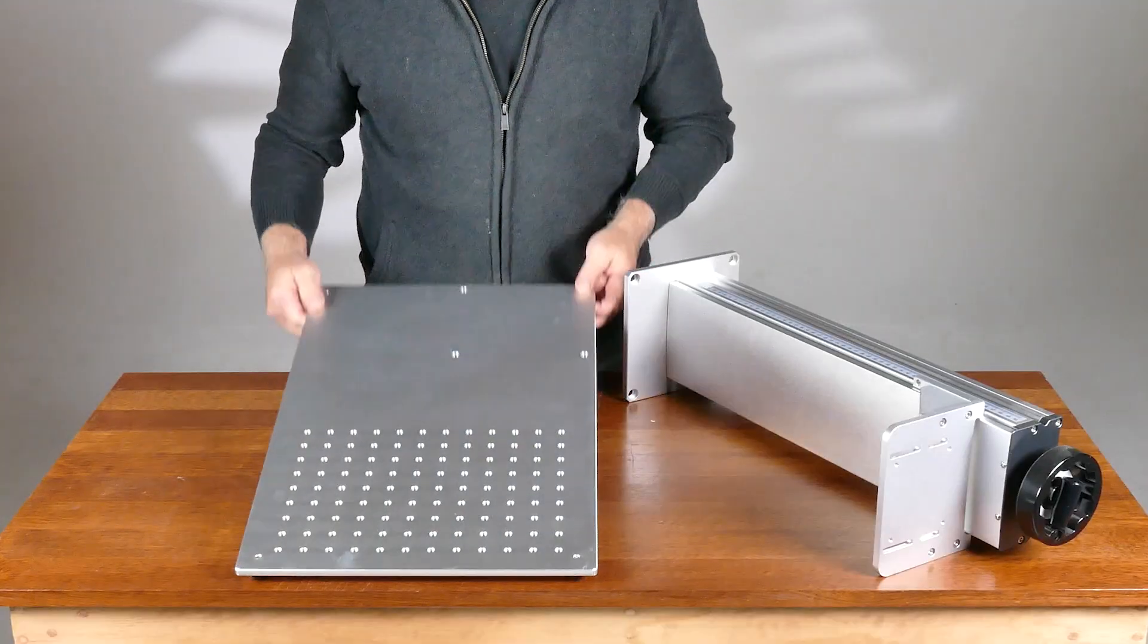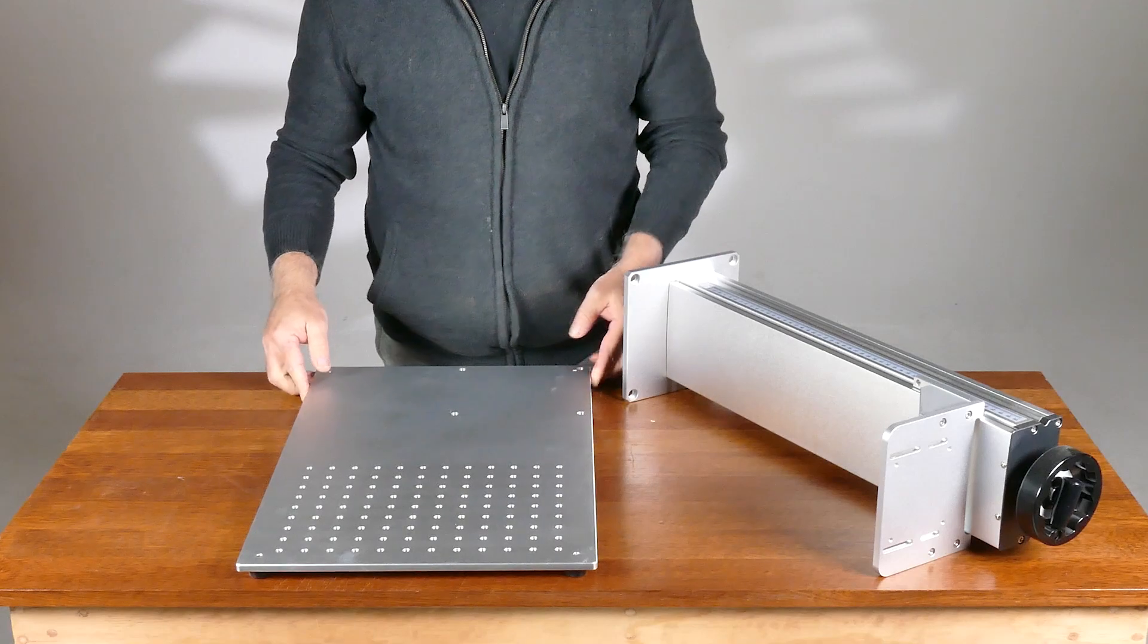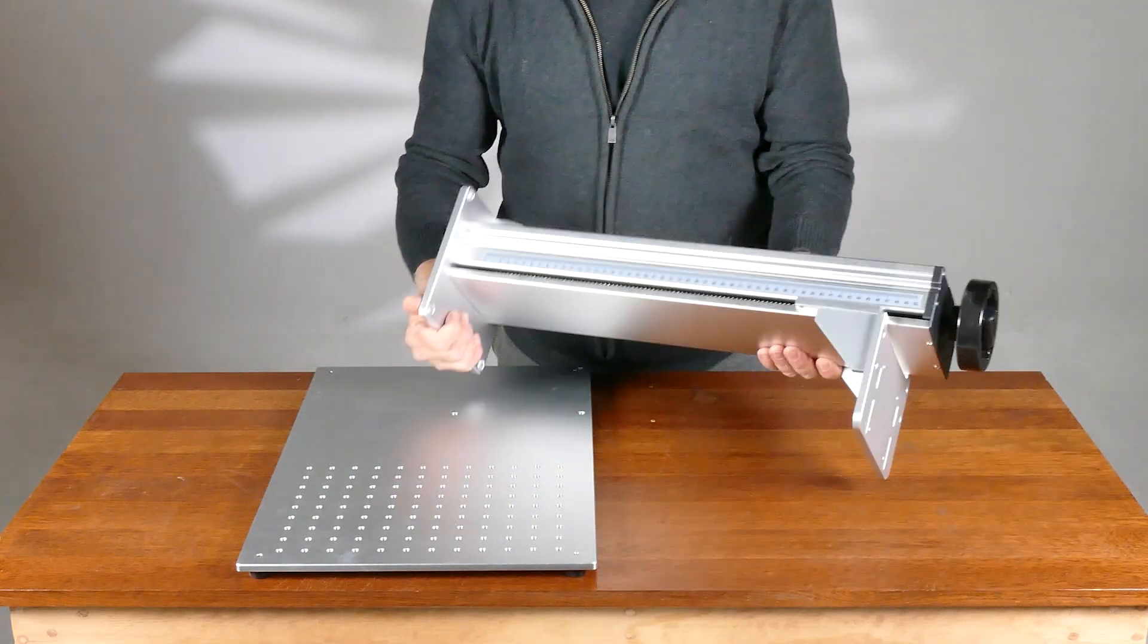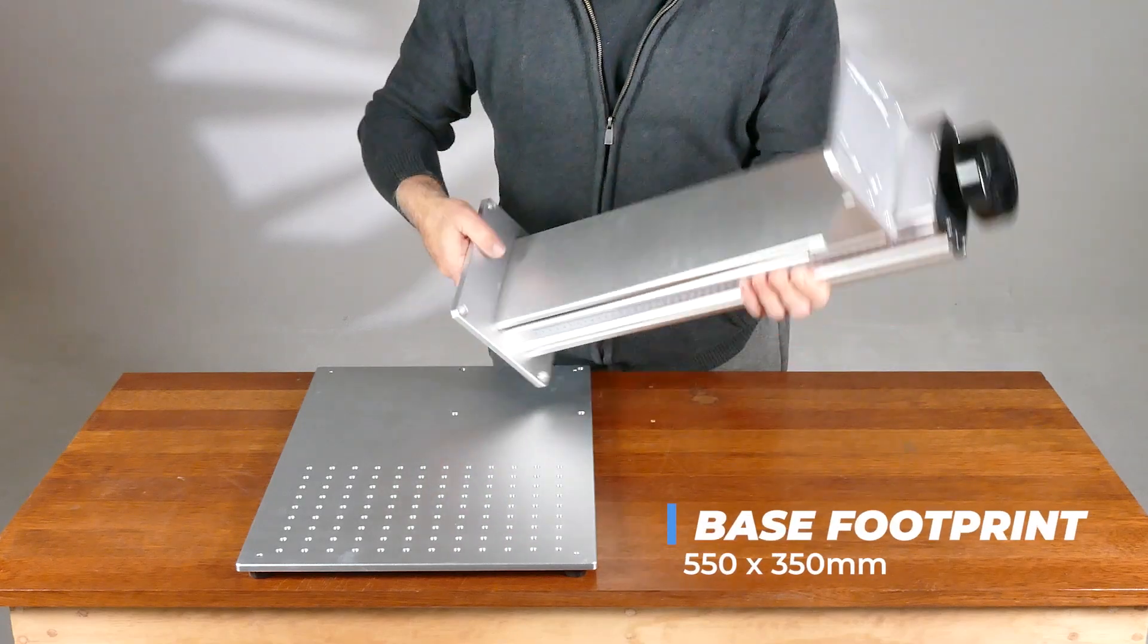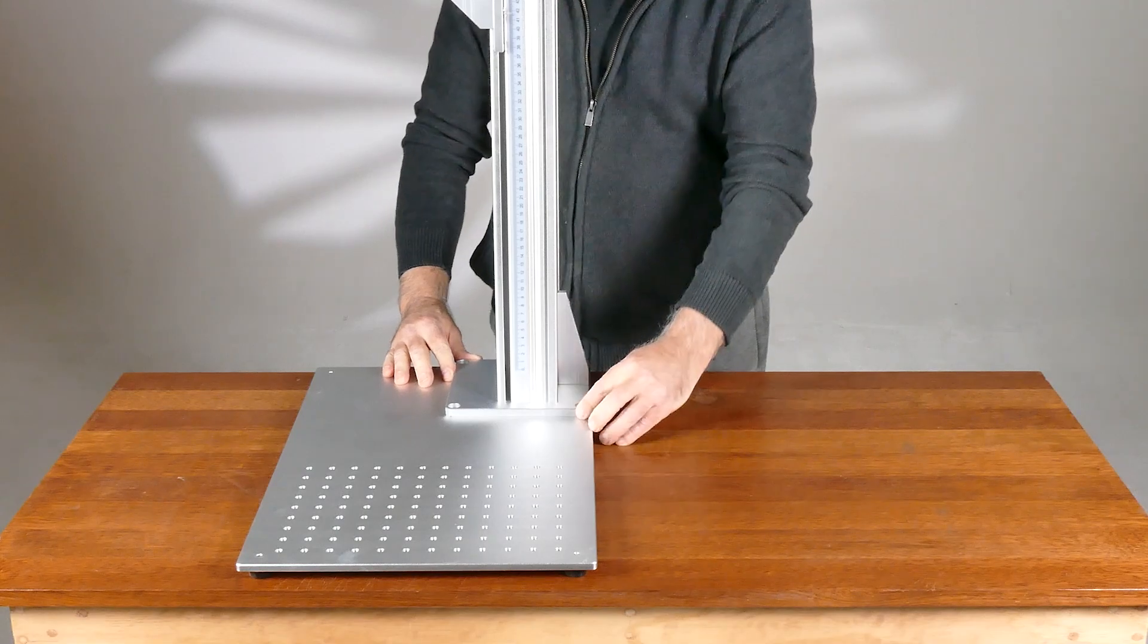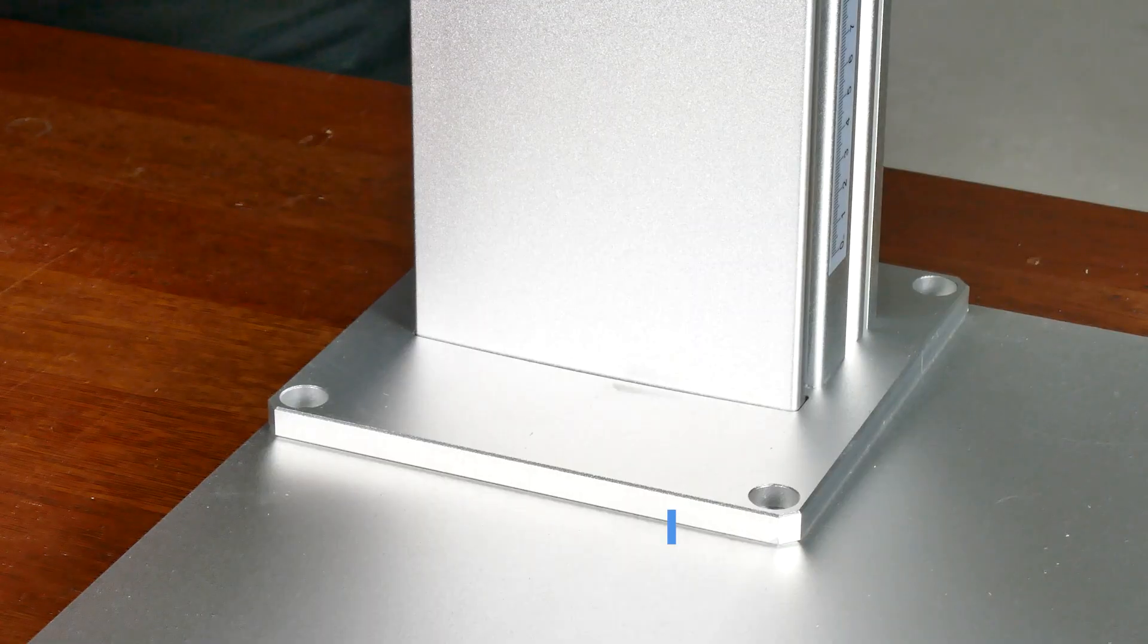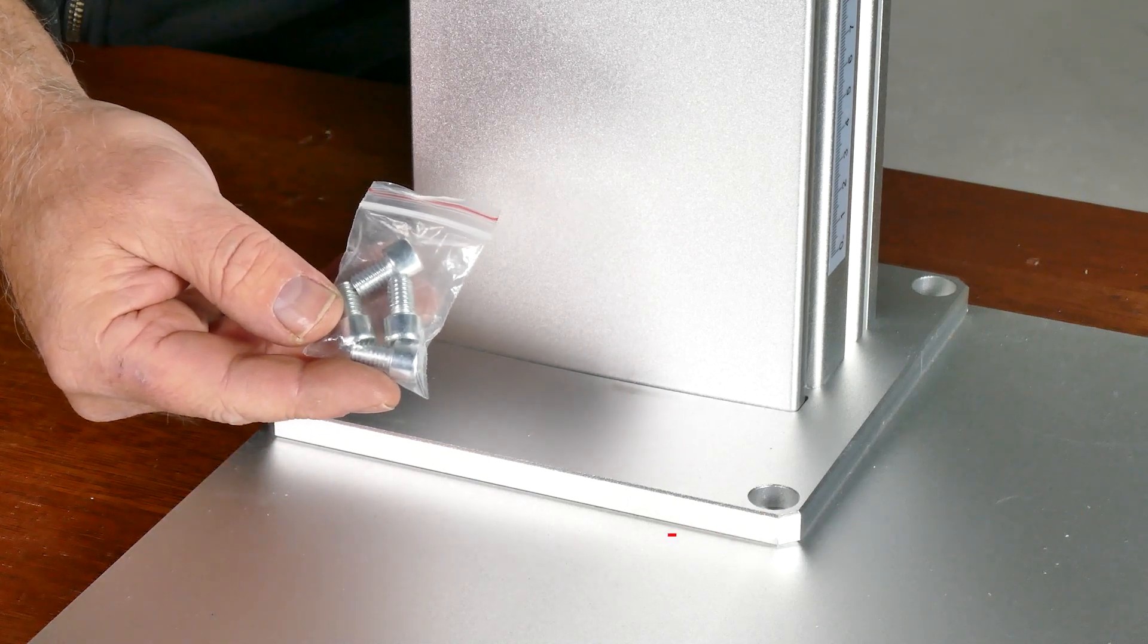First thing I noticed when I was unboxing the unit was how sturdy and how well it was constructed. The base and elevator are made out of aluminum. The base is 550 by 350 millimeters and for the first part of the assembly I needed to connect the elevator to the base using these M8 12 millimeter screws.